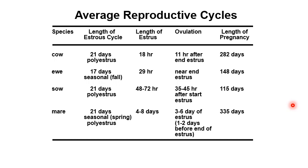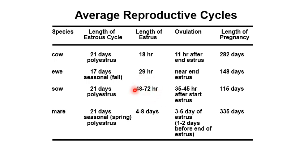In terms of estrus duration: for the cow, the length of estrus is about 18 hours; for the ewe, about 29 hours; for the sow, about 2 to 3 days (48 to 72 hours), though the gilt has a shorter estrus of 48 hours compared to the sow's 72 hours; and for the mare, it is longer, about 4 to 8 days.